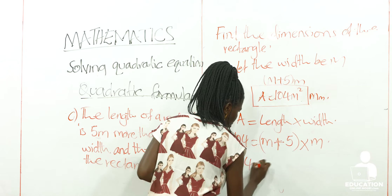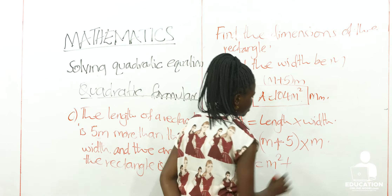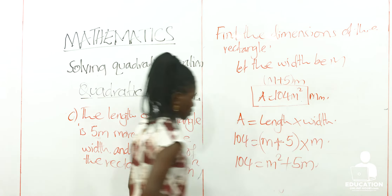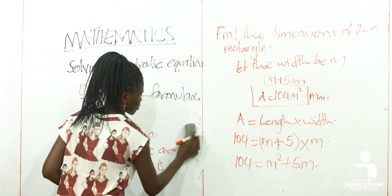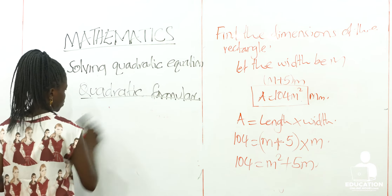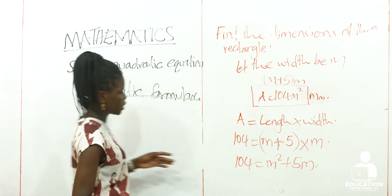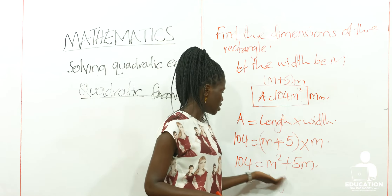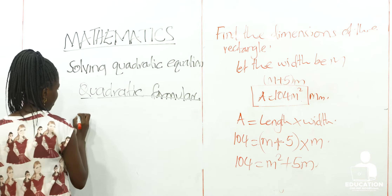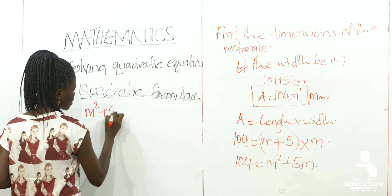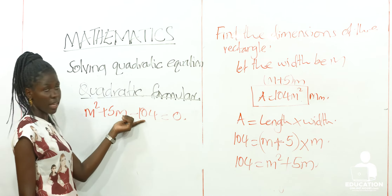We know the formula for area is area = length × width. So our area is 104, our length is M + 5, and we multiply it by M. So we have 104 = M(M + 5), and when you multiply this you get M² + 5M. Now it gives us a clear picture for the quadratic equation — when you take 104 to the other side it becomes M² + 5M - 104 = 0.